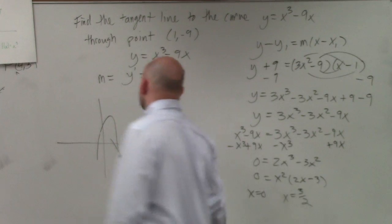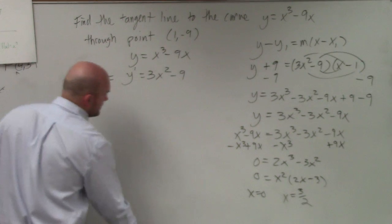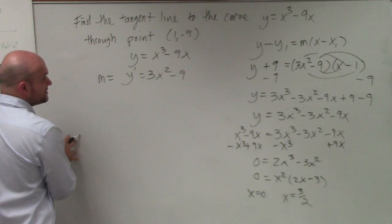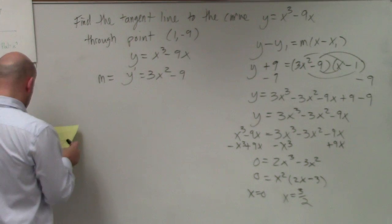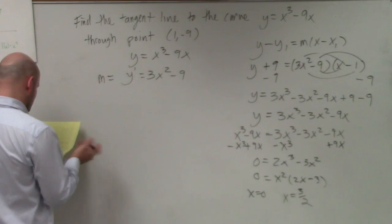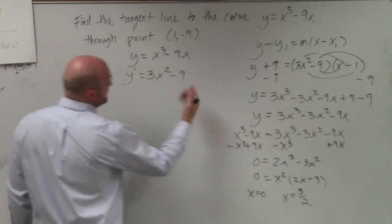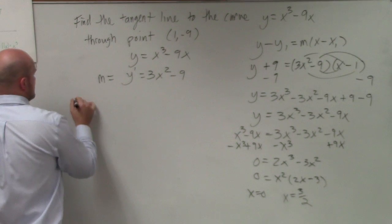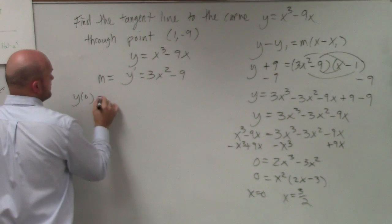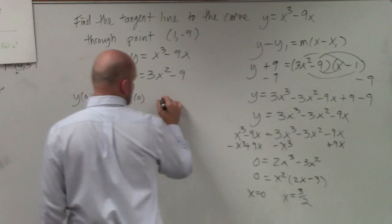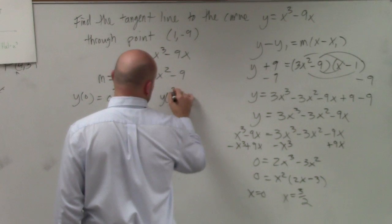So now I need to be able to identify what the y value is for those values. To do that, I'm simply just going to go through the rest of that. So now, if that's my x value, I need to be able to find the y value. So I have y₀ = 0³ - 9(0), and y₃/₂.